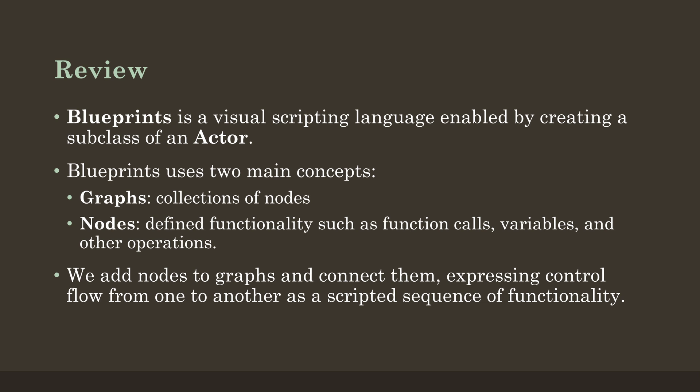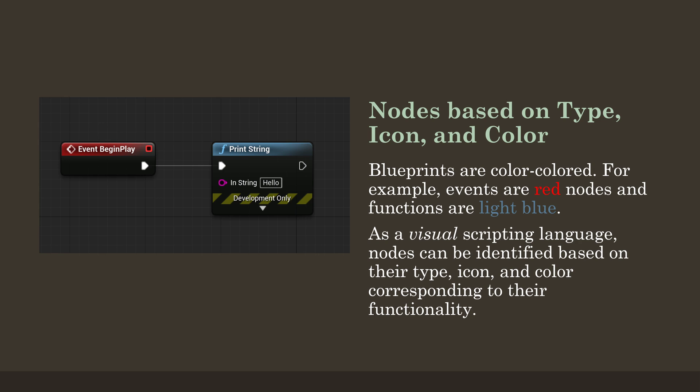Nodes within Blueprints are not only based on type, but also have icons and colors — it is a visual scripting language, so Blueprints are color coded. For example, events are in red; notice Event Begin Play is in red, and functions are in light blue. Notice both have their own icons: the event icon, a little arrow pointing to the right, and the F icon for functions. Nodes can be identified based on their type, icon, and color corresponding to their functionality.